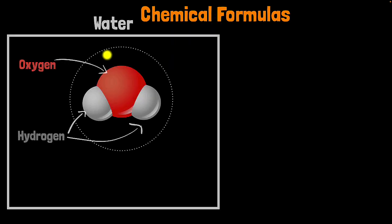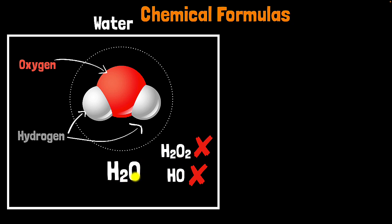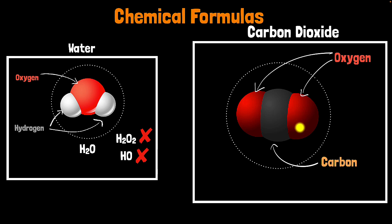Now let's see how to write chemical formulas. For water, one oxygen atom is always connected to two hydrogen atoms, so we write the formula as H2O — the 2 is written as a subscript representing two hydrogen atoms connected to one oxygen atom. We would not write it as H2O2 or HO — those would be wrong. Fun fact: H2O2 is called hydrogen peroxide, which is poisonous — ironic because H2O, water, gives us life, but add one more oxygen atom and it becomes poisonous. Similarly, for carbon dioxide, one carbon is attached to two oxygen atoms, so the formula is CO2, with the 2 as a subscript.